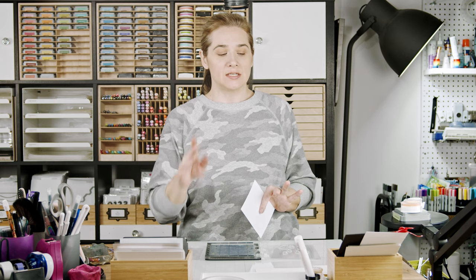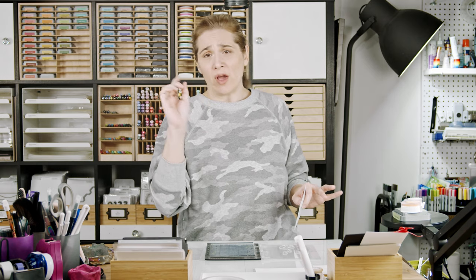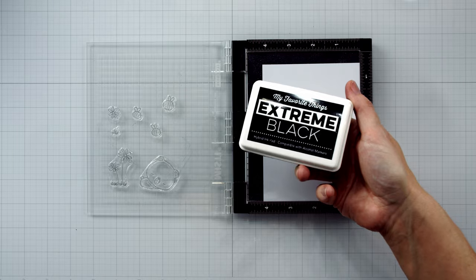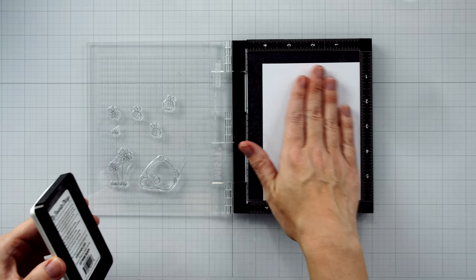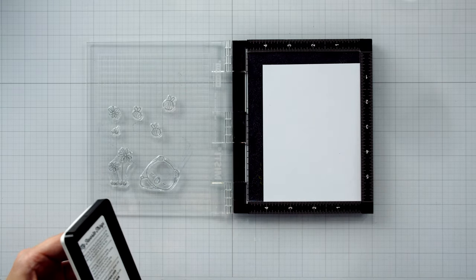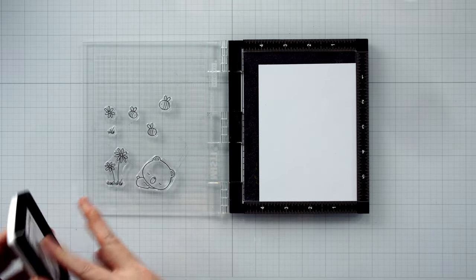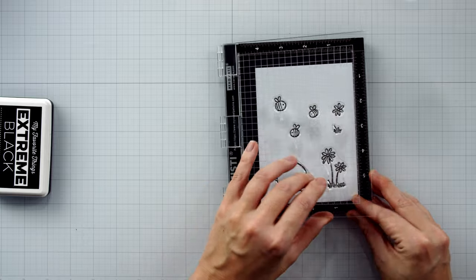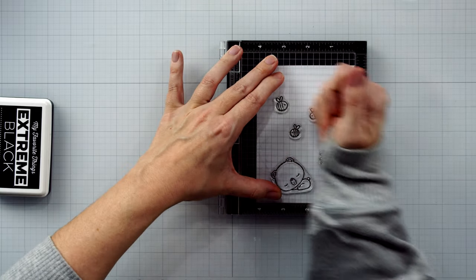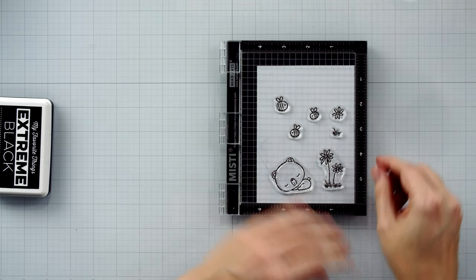I'm going to set the background aside for just a minute and move on to the images, stamping my images. And then when we put the card together, the background will become way cooler. I promise. I'm using MFT's extreme black ink to stamp my images out today and I'm stamping on Heffy Doodles alcohol marker friendly paper. I love this paper and it's super white. It's a little thin but it's super white and I really don't care that it's thin. It doesn't make a difference to me.